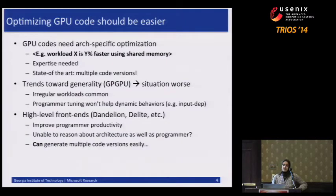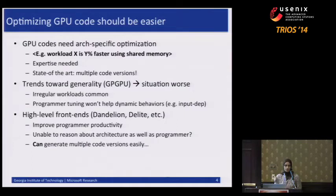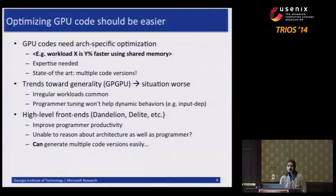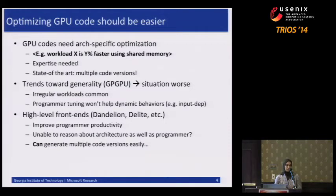Another trend is a plethora of high-level front-ends for GPUs, to make programming easier. As you can imagine, exploiting all those GPU features makes programming very difficult. High-level front-ends such as Dandelion, Delight, and many others improve programmer productivity by providing an abstraction on top of the GPU programming language. But because of that abstraction, many of these frameworks are not performant at this point because they don't really deal with these architectural optimizations.